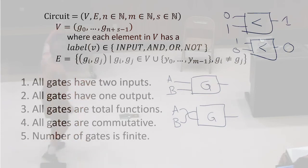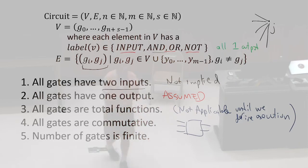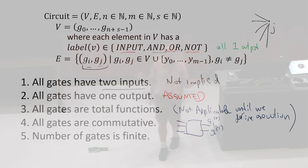The one output assumption is because if a gate had multiple outputs, the way we represent it there's only one way to refer to the output of a gate. So we don't have a way to distinguish multiple outputs. If a gate had two outputs, the way we've defined our circuit we don't have any way to distinguish that — the edges are edges between gates. So if a given gate had two outputs, we can't refer to them. They'd have to be the same, so they might as well just have one output.